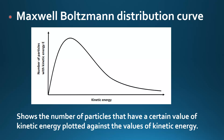Before we have a look at the effect that temperature has on the rate of a reaction, we'll have a quick look at the Maxwell-Boltzmann distribution curve. It shows the number of particles that have a certain value of kinetic energy plotted against the values of kinetic energy. On the y-axis you have the number of particles with kinetic energy E, and on the x-axis you have their value of kinetic energy. The area under the curve shows the total number of particles in the sample, and at a certain temperature the particles in the sample have a range of kinetic energies.